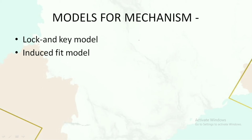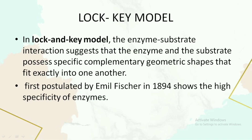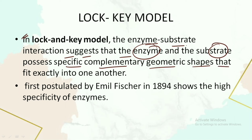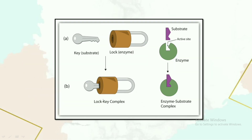There are two main models for understanding enzyme action. The first is the lock and key model and the second is the induced fit model. In the lock and key model, the enzyme-substrate interaction suggests that the enzyme and substrate possess specific complementary geometric shapes that exactly fit with one another. This was postulated by Emil Fischer in 1894 and shows very high specificity for enzymes.